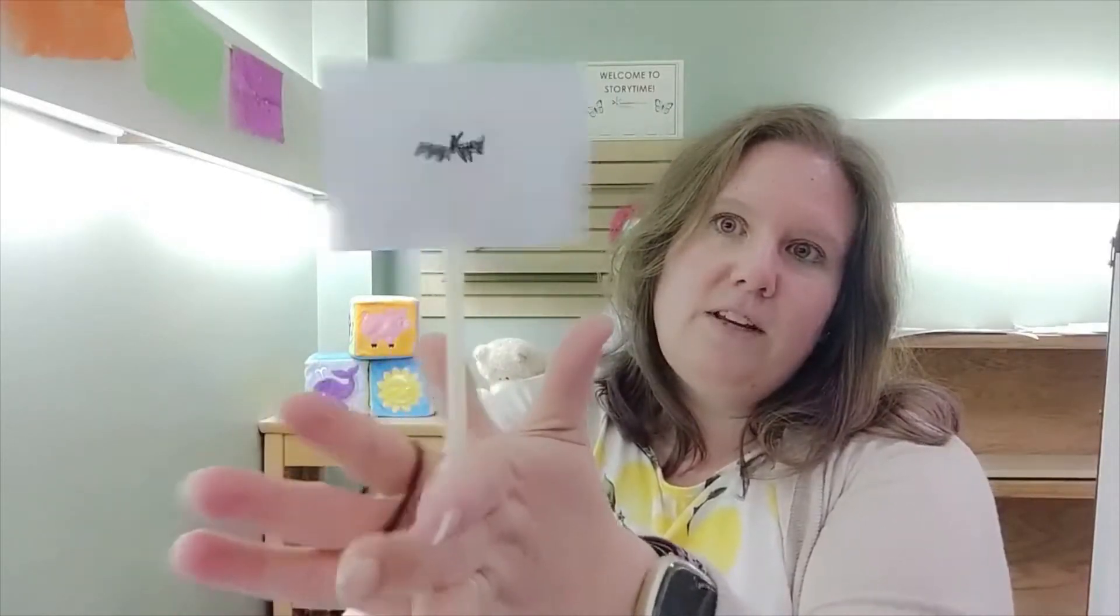If I hold the straw between my palms and rub my palms back and forth, my paper spins. What you want to do is hold the cardstock right at your eye level so you're looking straight at it. And then if you spin the cardstock, I'm hoping you can kind of see that on the video. If you spin it, you start to see both pictures at the same time, so it looks like the bat is flying in front of the moon.